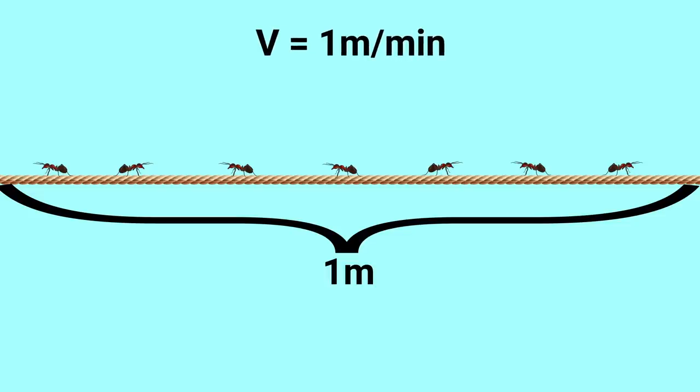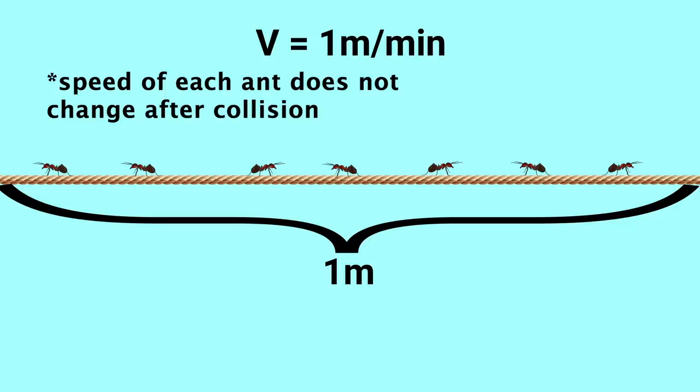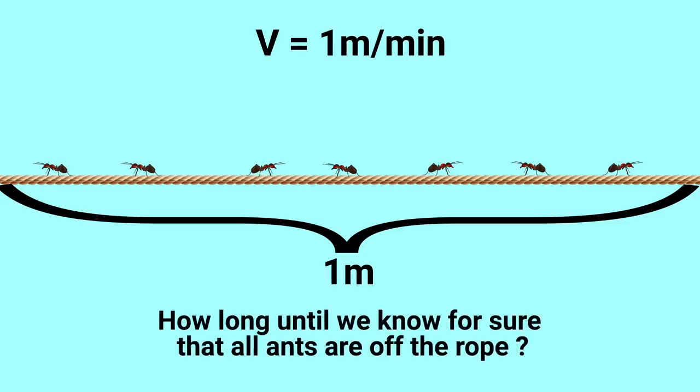Then all of the ants start walking at a rate of one meter per minute, so one ant could walk the entire rope in one minute. But when any two ants meet, they immediately switch directions and start walking the other way, and this process continues over and over. The question is, how long is it until we know for sure that all the ants are off the rope?